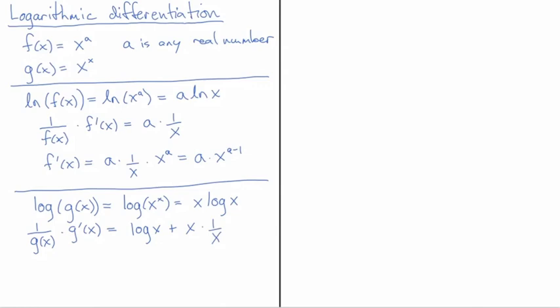And so this will cancel and give me one, but let's just write it all out here. So g prime of x is equal to, now this is going to be g of x plus, and now x times one over x is just one, so when I multiply through by the g of x, I just get a g of x.